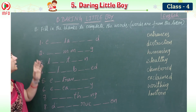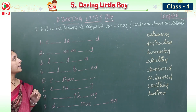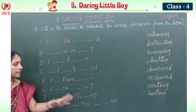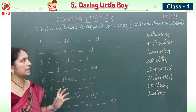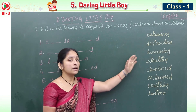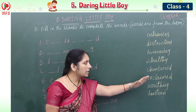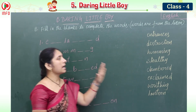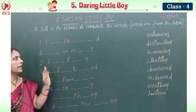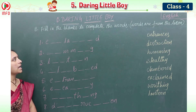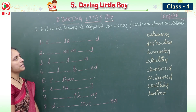Next we have the second part of the word search: fill in the blanks to complete the words from the lesson. Eight words are given with missing letters. The first one, E _ _ L A _ _ _ D, is exclaimed: E-X-C-L-A-I-M-E-D.